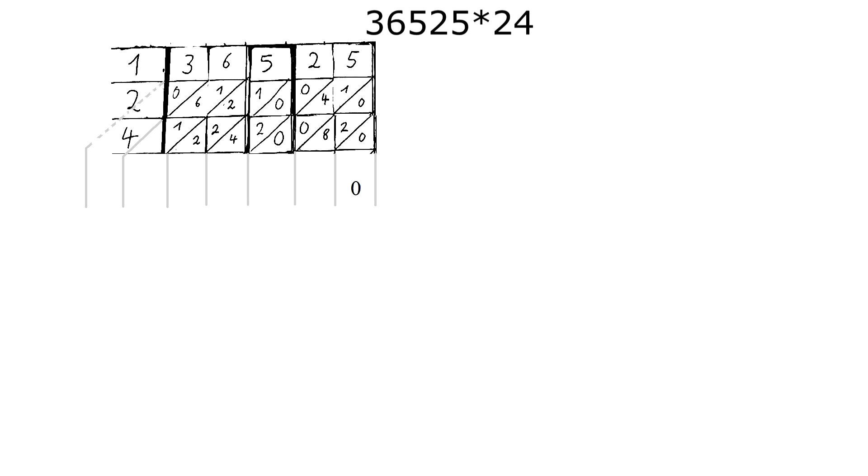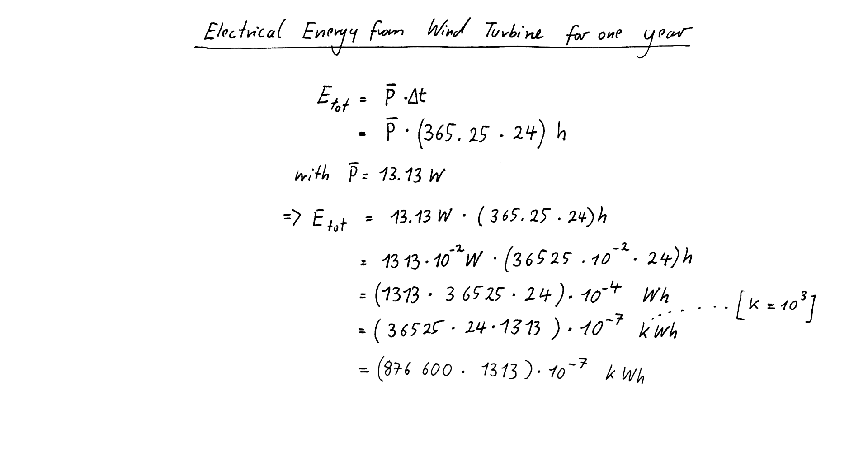The first number is a 0. 8 plus 2 is a 10. That means write a 0 down and carry over a 1. 1 plus 4 plus 1 is a 6 and you go on like that as we did before. The result is 876,600. We can now write that down. And we can proceed to the second multiplication.